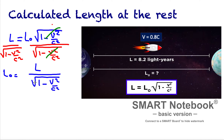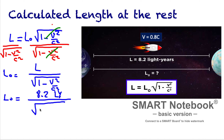Now we input all the values. L is 8.2 light years — written as 8.2 ly. In the denominator, we plug in 1 minus, and instead of v squared we substitute 0.8c squared, so we have 0.8c squared divided by c squared.